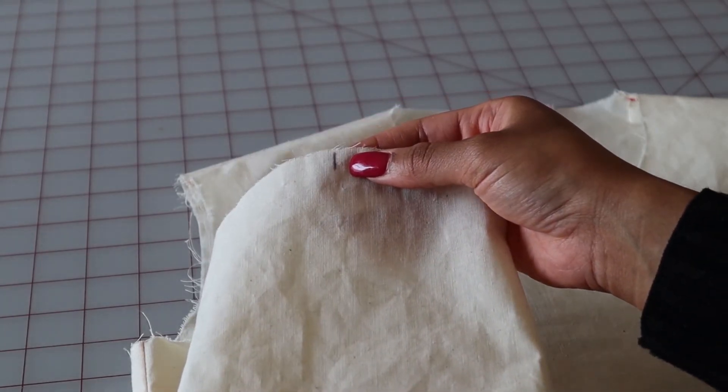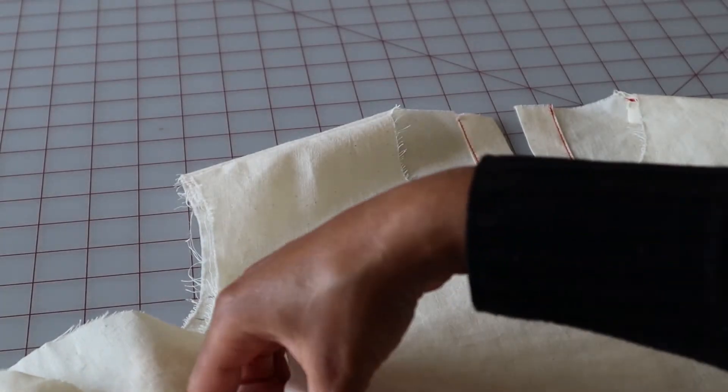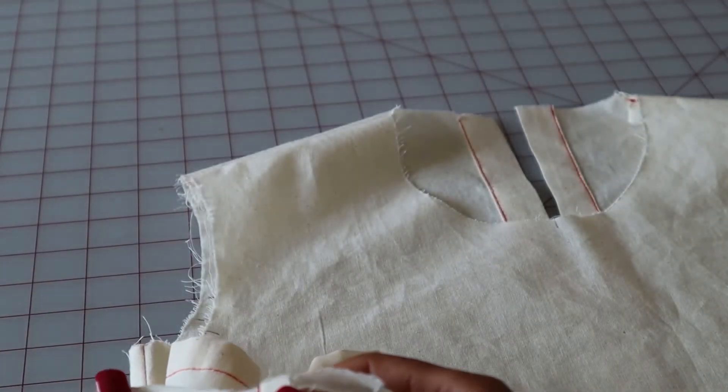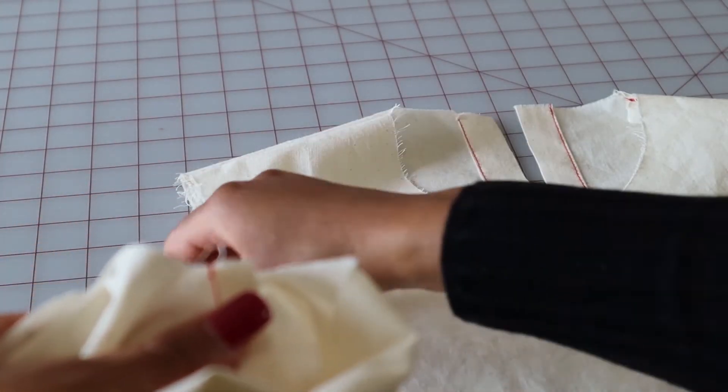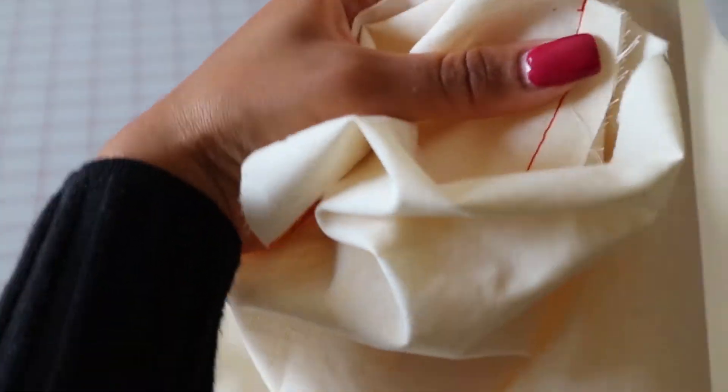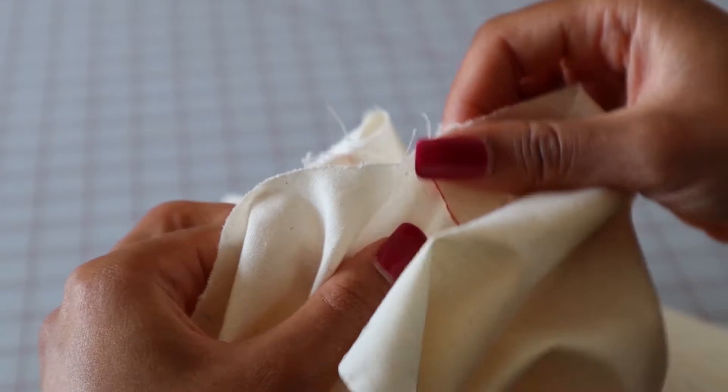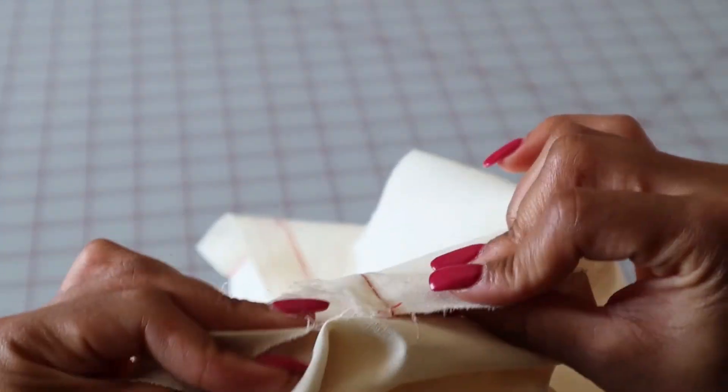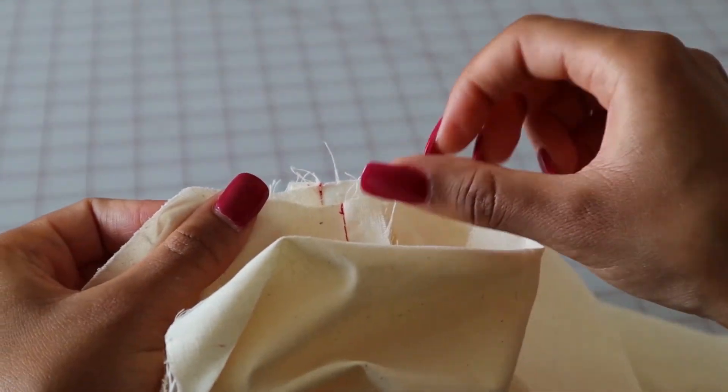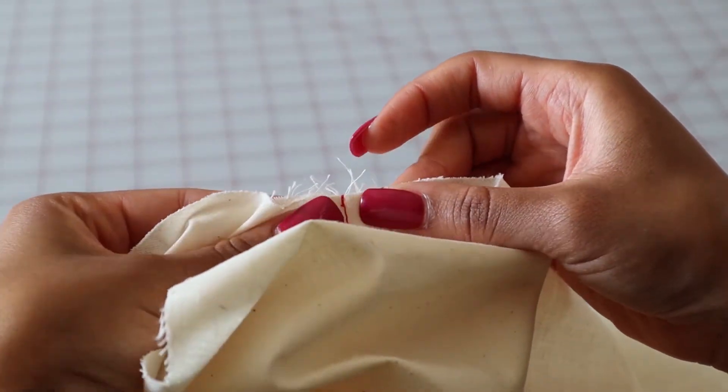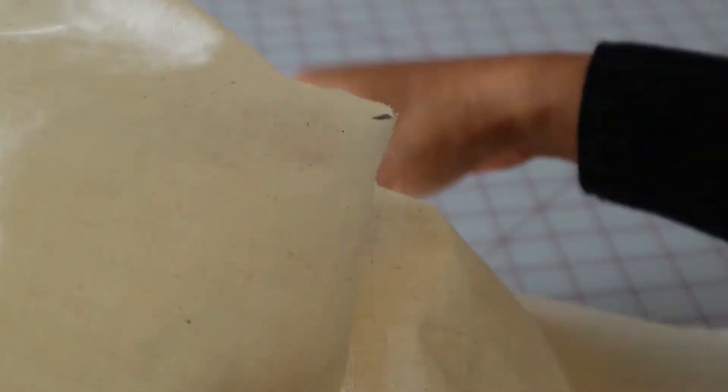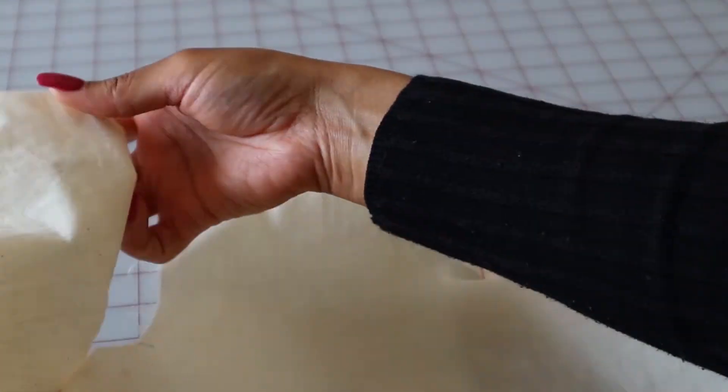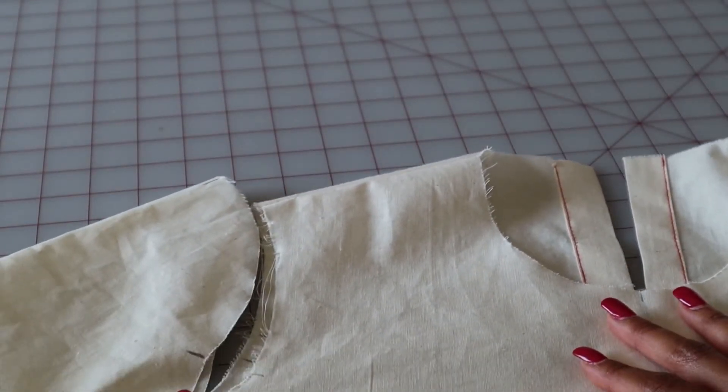So the first thing that we will do is match the bodice side seam with the seam of your sleeve. I have the camera super close, so in this video tutorial I will be readjusting quite a bit. I apologize, just bear with me. I wanted you guys to see every detail. Okay, so once you have those two seams matched like so, pin them together.